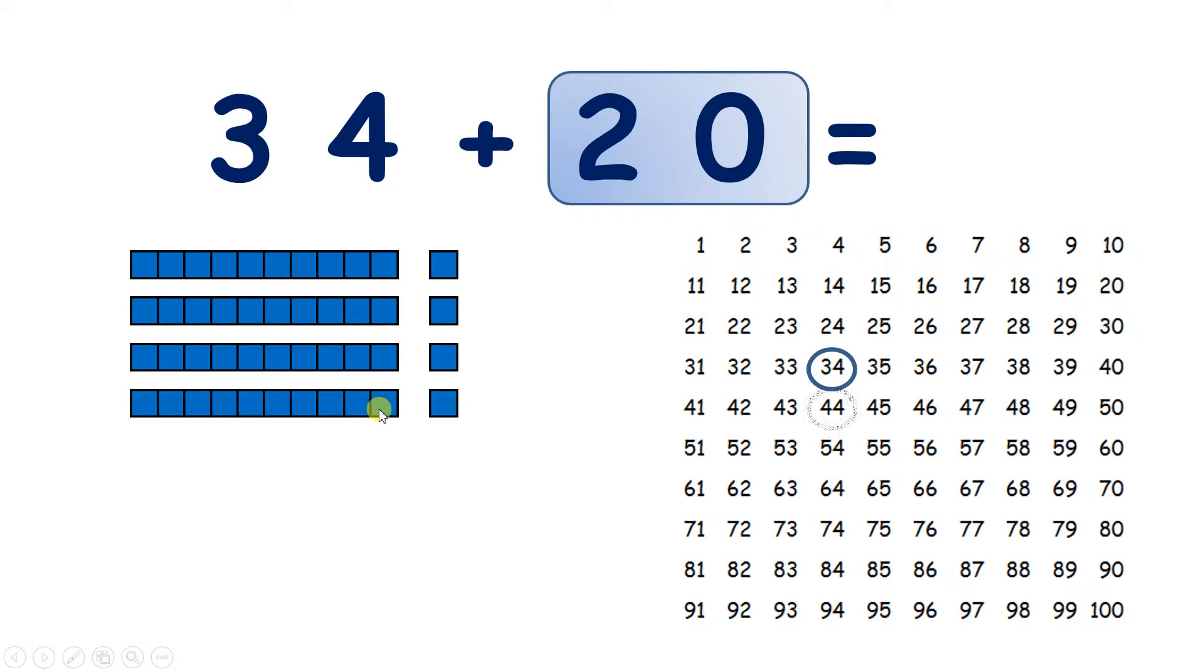So add 1 ten, and we have 44. Remember, on a 100 square, adding 10 means moving one place down.